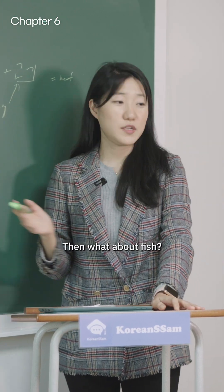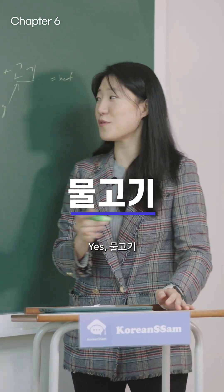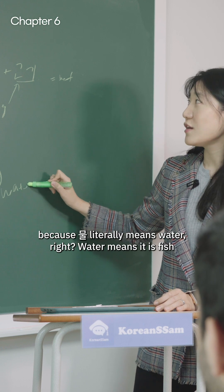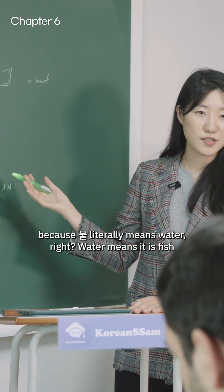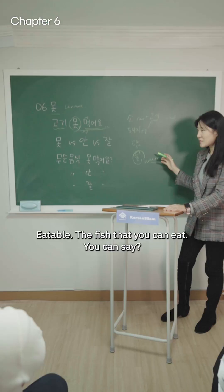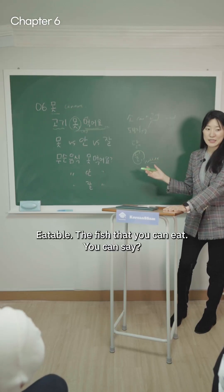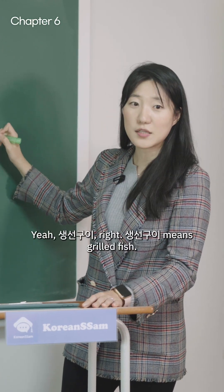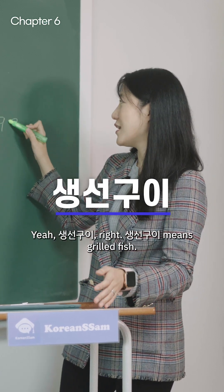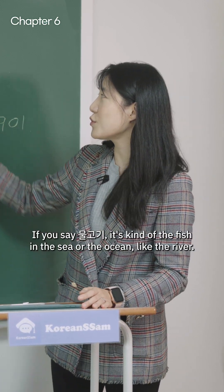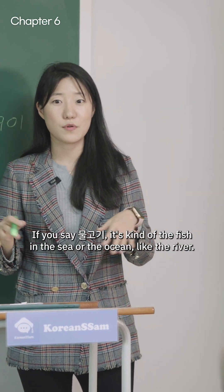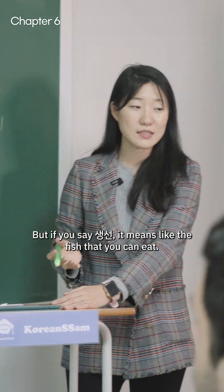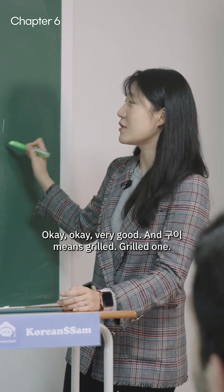What about fish? 물고기. It's interesting because 물 literally means 'water,' so water + meat = fish, 물고기. But if you want to say the fish that you can eat, you say 생선. 생선 고이 means 'grilled fish.' 물고기 refers to fish in the sea, ocean, or river, but 생선 means the fish that you can eat. And 고이 means 'grilled.'